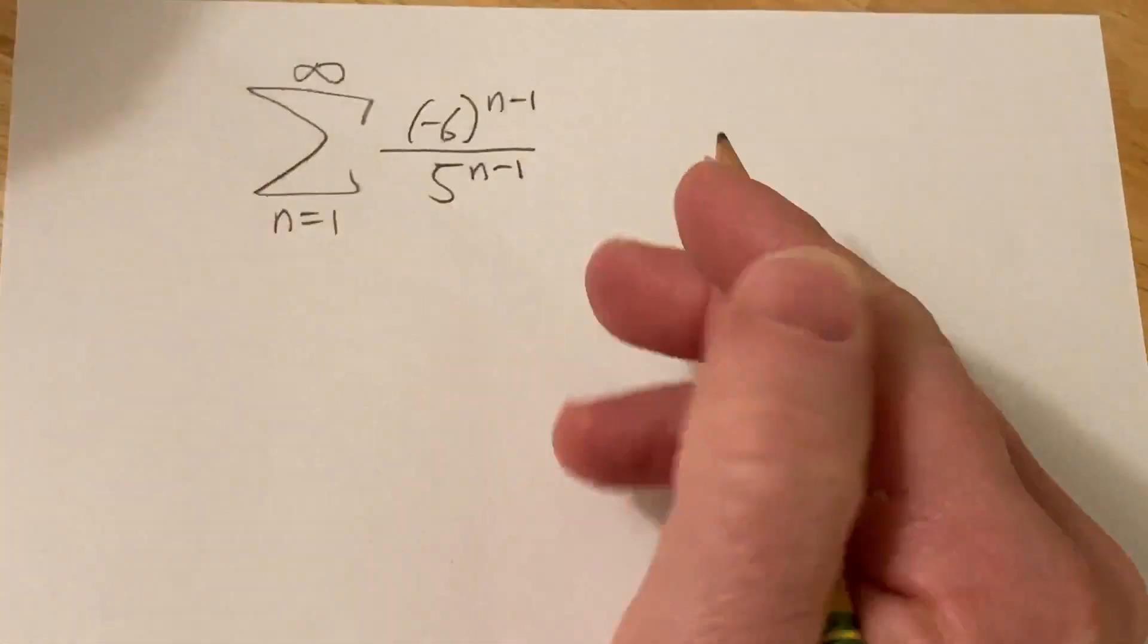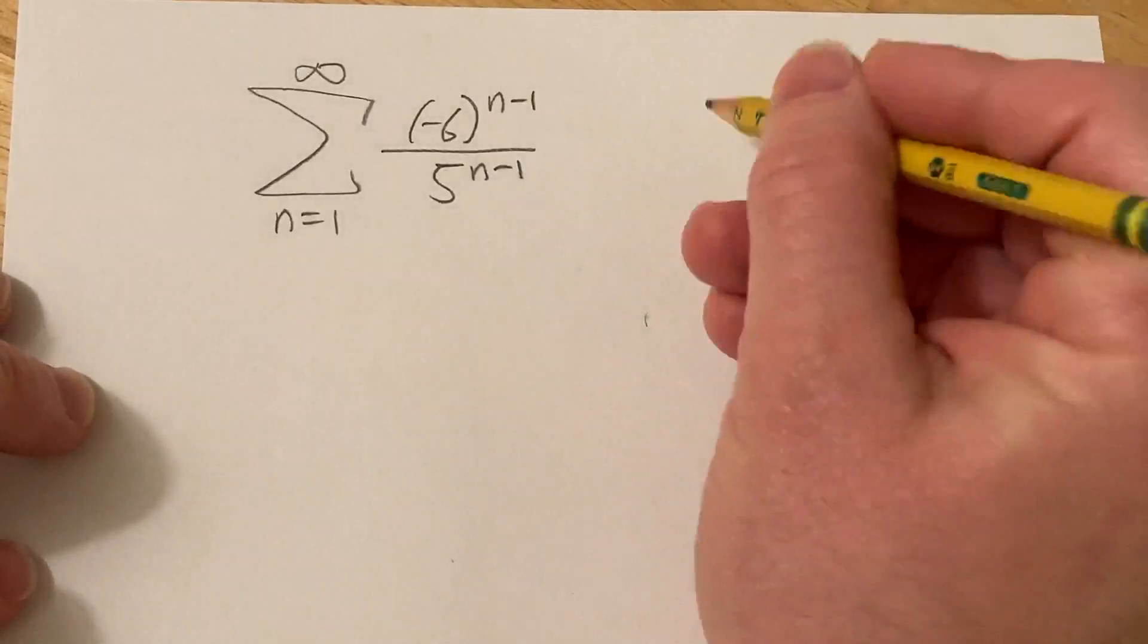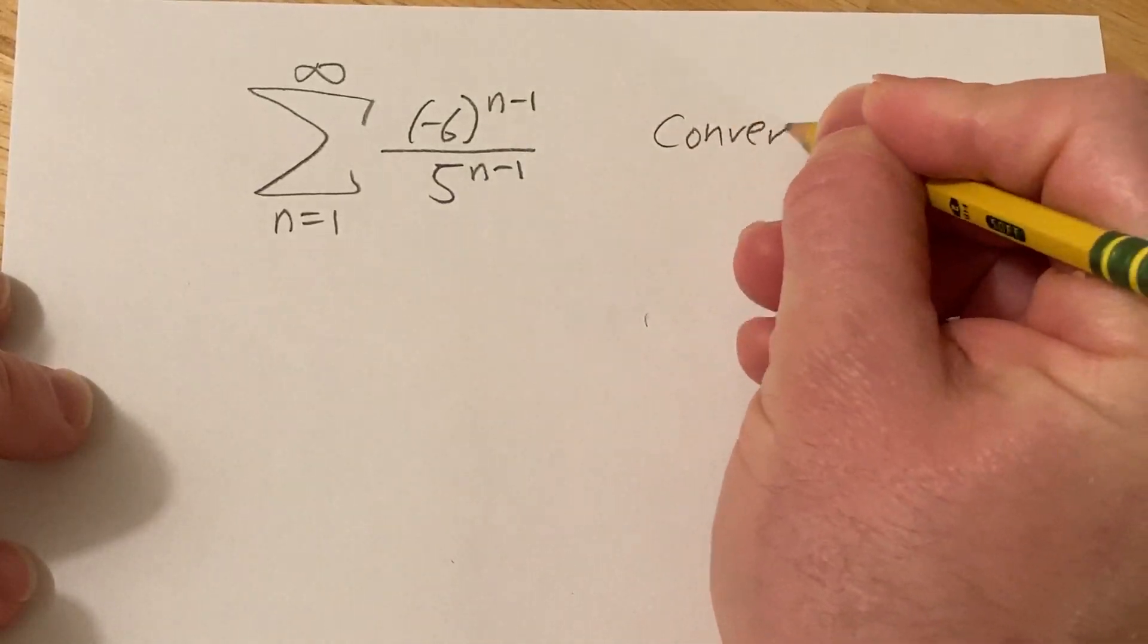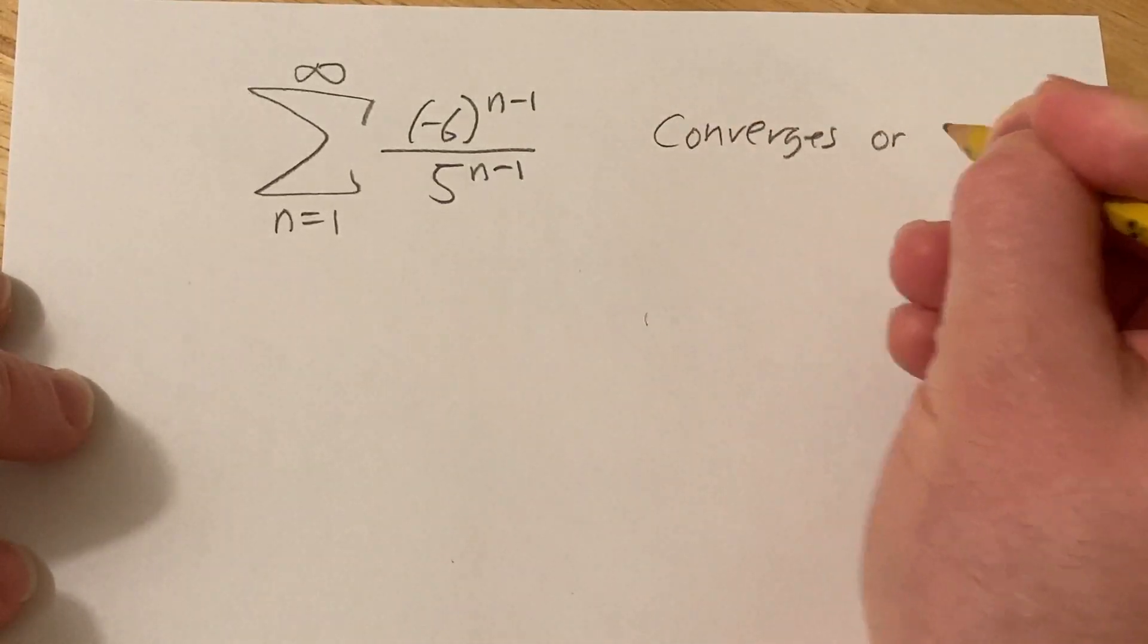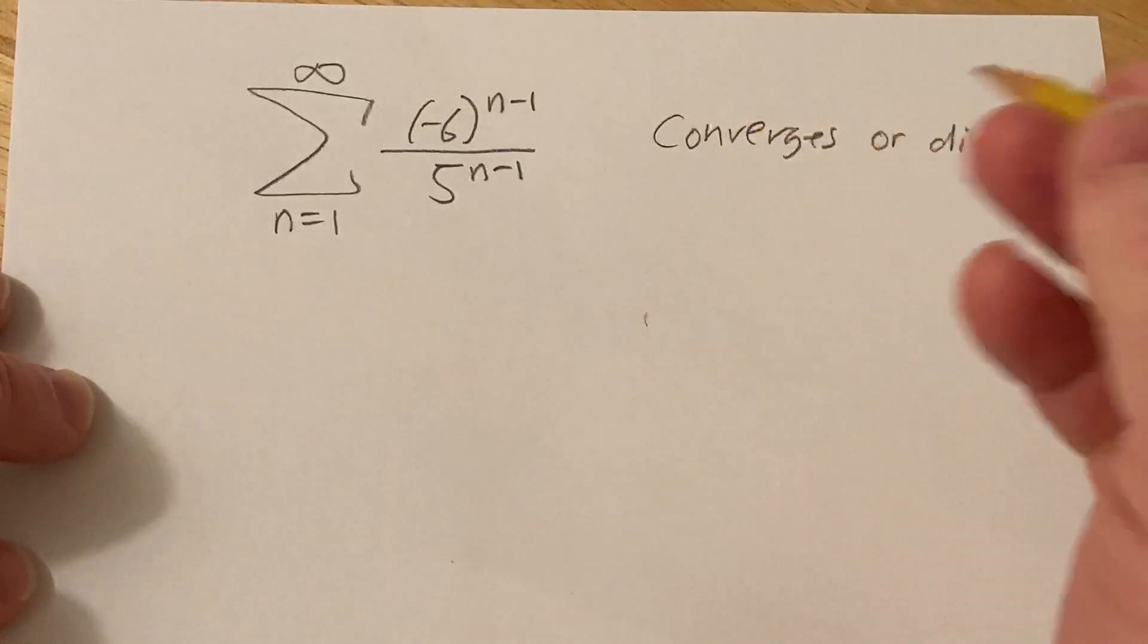Hi, in this problem we have an infinite sum, and we want to know if it converges or diverges. Converges or diverges, and if it converges we want to find the sum.